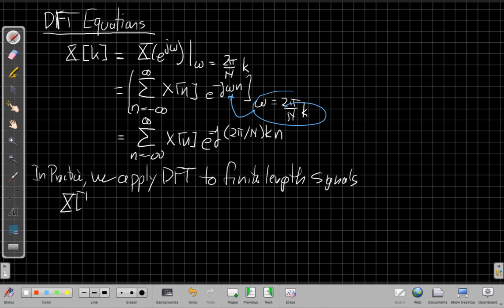So when we do that, we get the final form, which is x of k is going to be the sum over this finite length signal from 0 to n minus 1 of x of n e to the minus j omega. We replace omega by this 2 pi over n times k n. And this is our analysis equation.